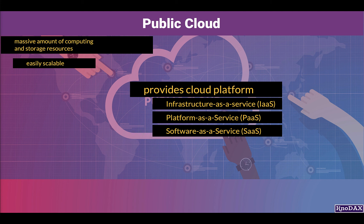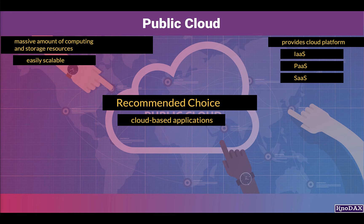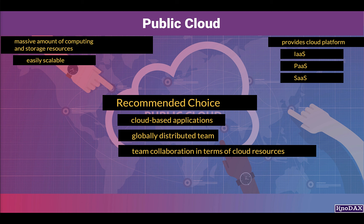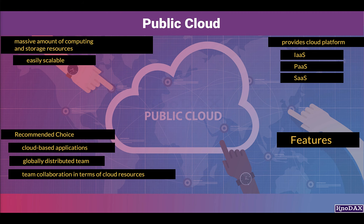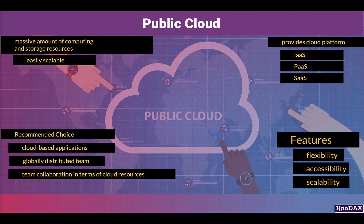The public cloud is recommended for developing cloud-based applications for globally distributed teams because the public cloud helps collaborate with cloud resources. You also have flexibility — for example, once the application development is complete and you need to move the final application to a more secure private cloud, you can do that easily. Flexibility, easy accessibility, and scalability of computing resources are the main features of the public cloud.